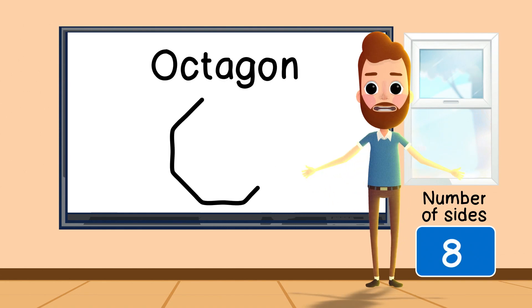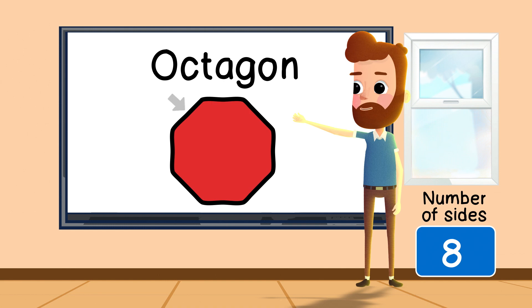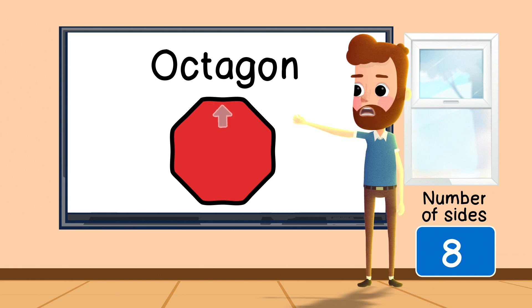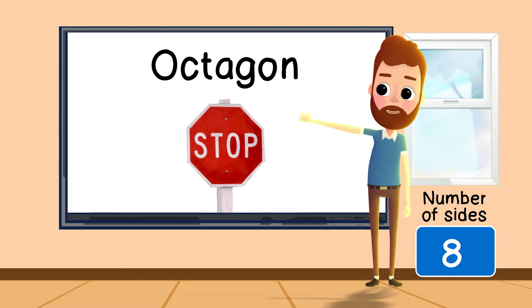An octagon is an eight-sided shape. Side one, side two, side three, side four, side five, side six, side seven, and side eight. A stop sign is an octagon.